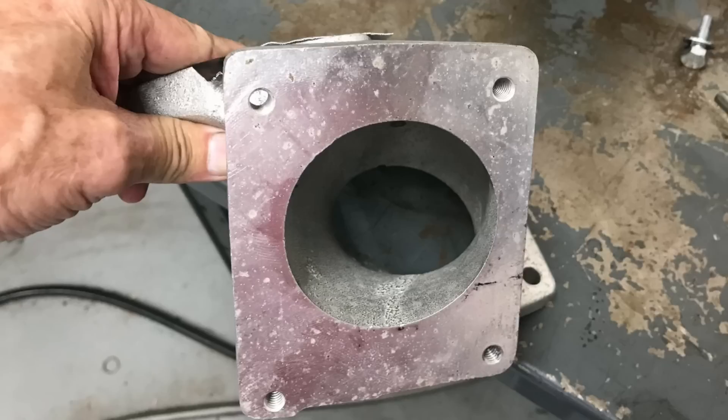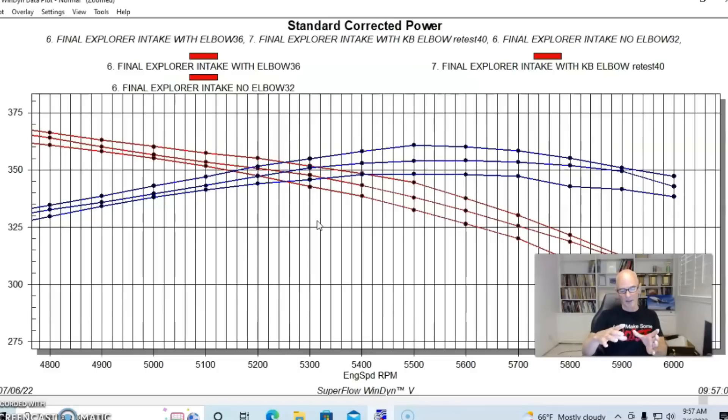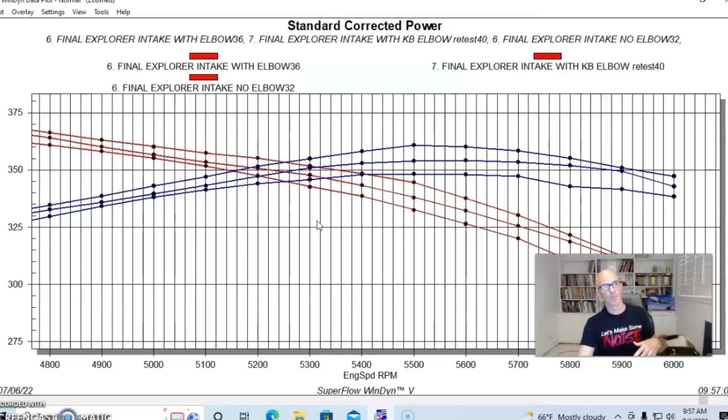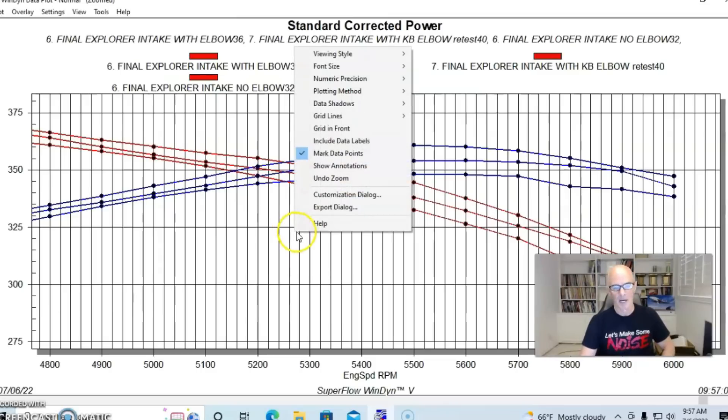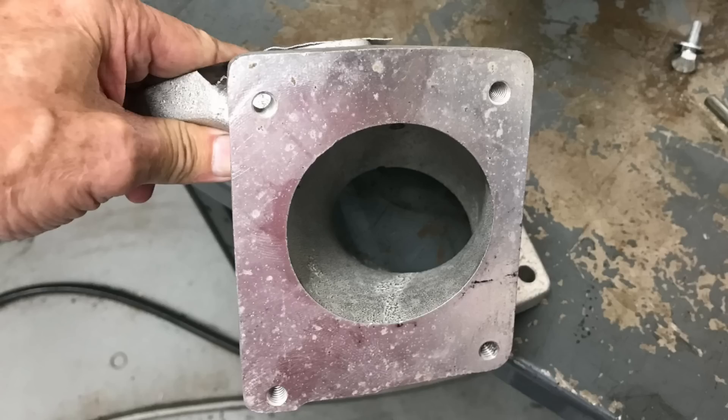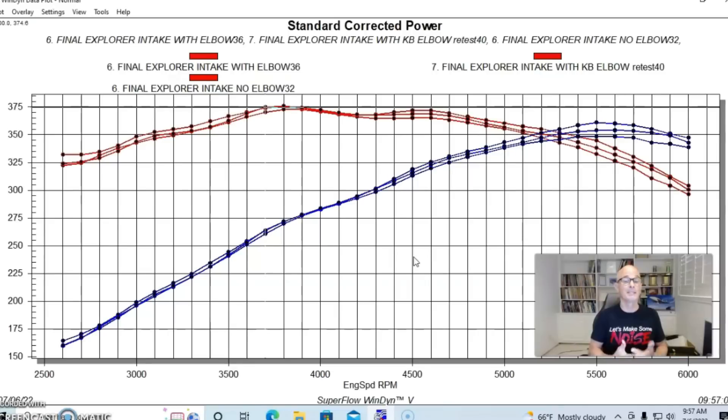And the reason for that is this elbow was actually bigger than the opening on the elbow for the Explorer intake manifold. This one was actually over 70 millimeters. So, it had probably more flow, which helped it produce more power kind of on the top there. And it helped out a little bit. So, that's another elbow. I don't know if those are available anymore, but we had it sitting around. So, we decided to test it.